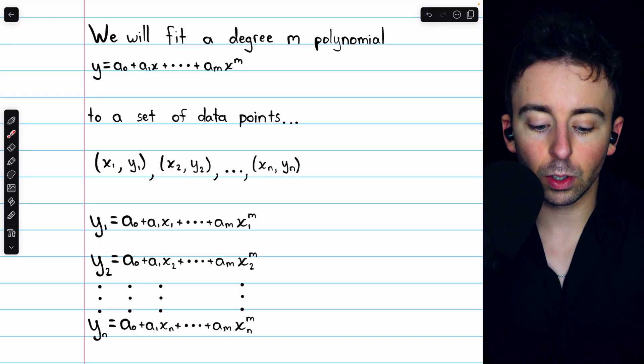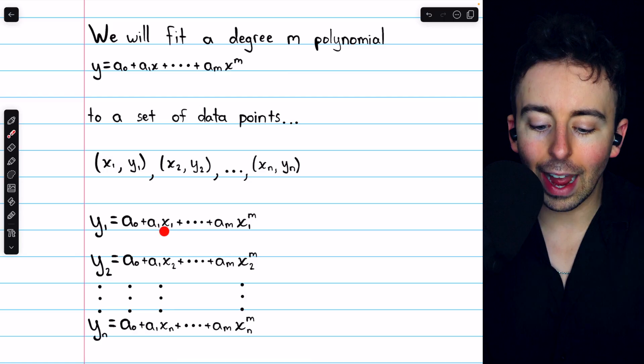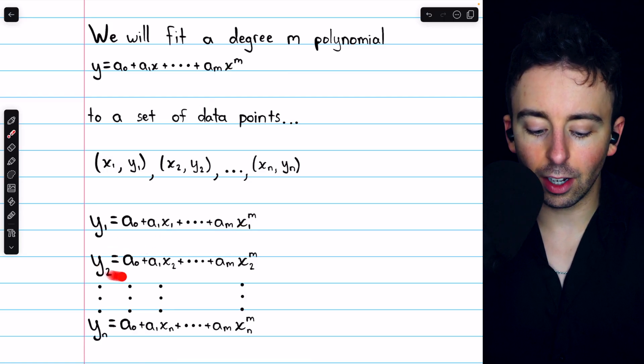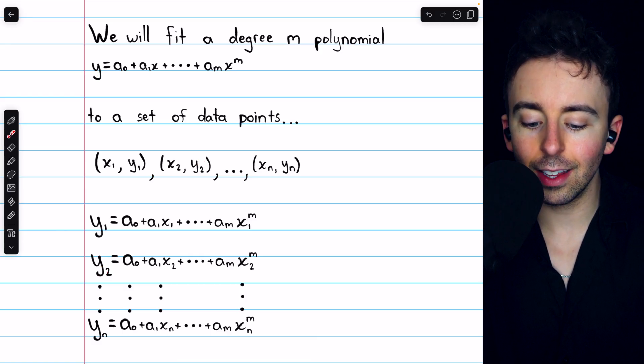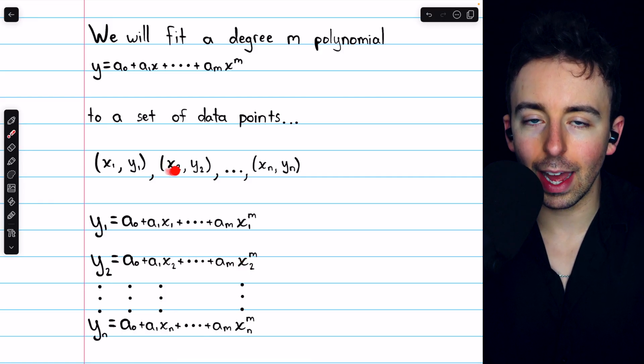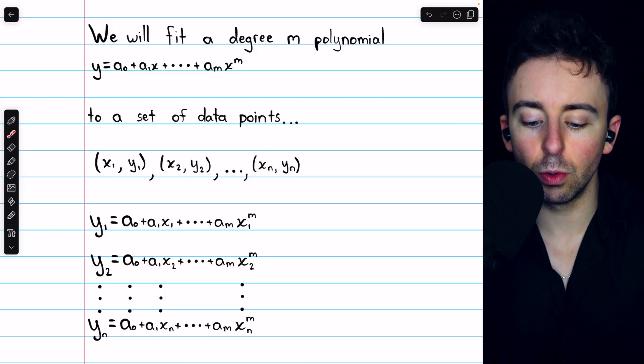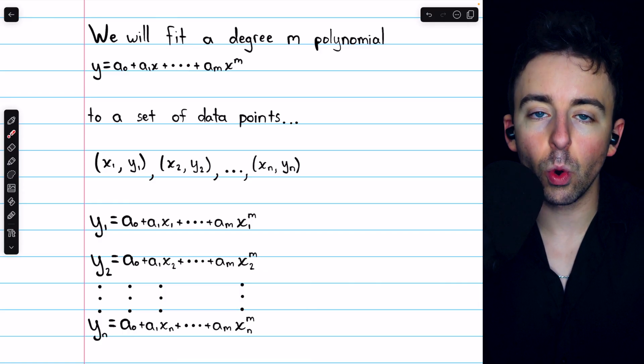For example, we plug in the first data point x1, y1, and so we see we have y1 equals this polynomial but with each x replaced by x1. And then in the second equation, we have y2 and then this expression but with each x replaced by x2. We're taking each point and plugging it into the degree M polynomial. So we get N equations.